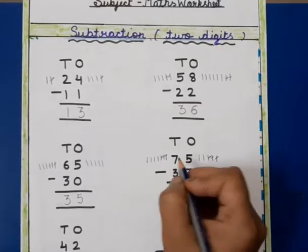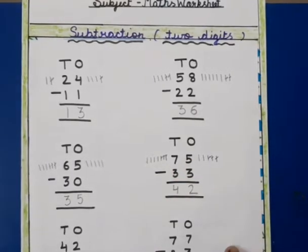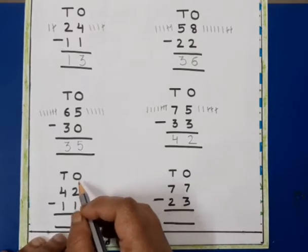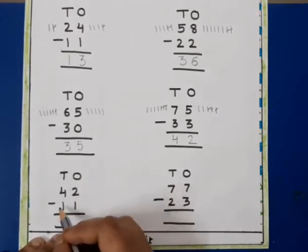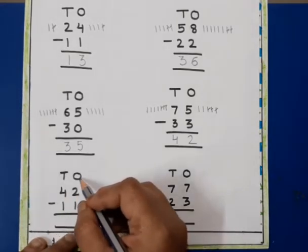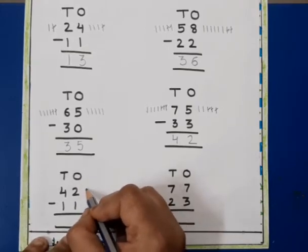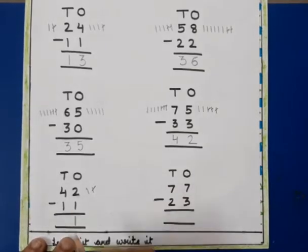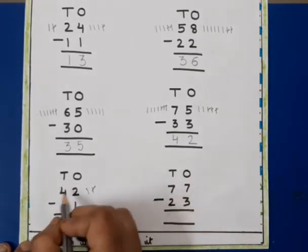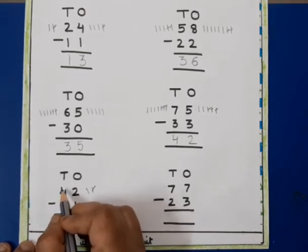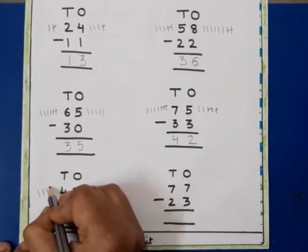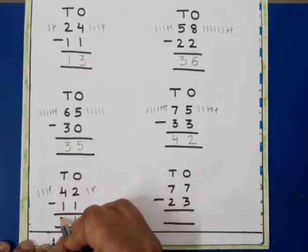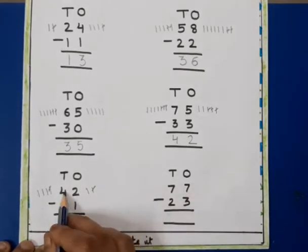When we subtract 33 from 75 we will get 42. Now next question, my dear kids. This is 42 and this is 11. We will subtract 11 from 42. This is ones — this is 2, we will draw 2 lines and cut 1, we will get 1. We will write 1 here. Now this is tens, this is 4, we will draw 4 lines and cut 1, we will get 3. When we subtract 11 from 42 we will get 31.